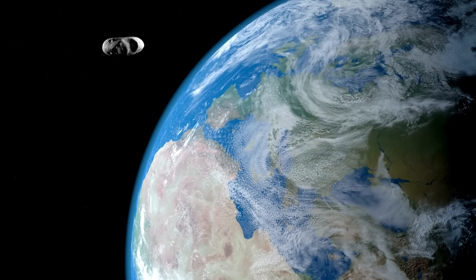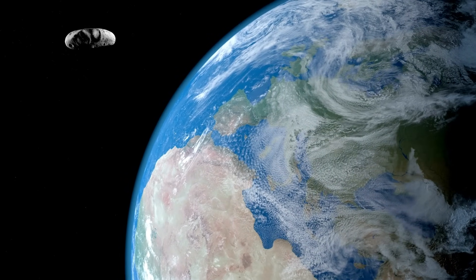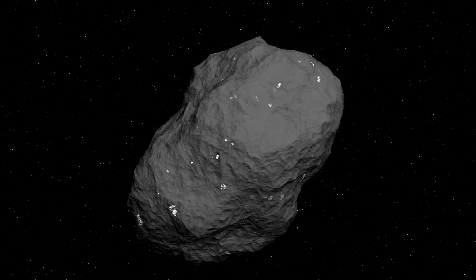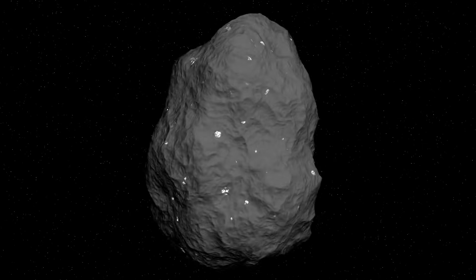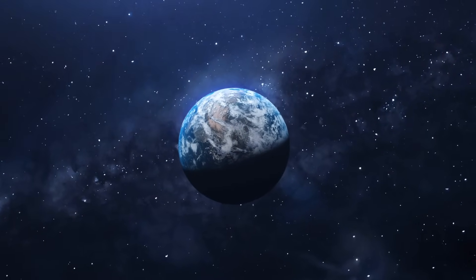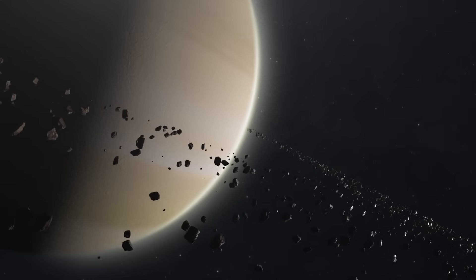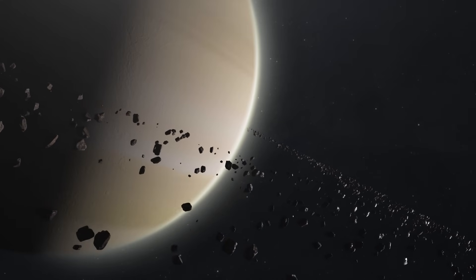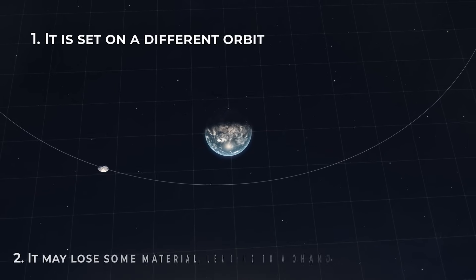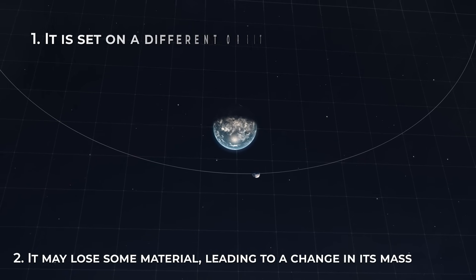OSIRIS-APEX is scheduled to enter orbit around Apophis shortly after the asteroid's close approach to Earth. Its mission is to assess how this encounter has impacted the asteroid's orbit, spin rate, and surface. The spacecraft will observe Apophis both before and after its close encounter with Earth. This is crucial because when an asteroid comes close to a planet, it undergoes certain changes. Firstly, it is set on a different orbit, and secondly, it may lose some material, leading to a change in its mass.